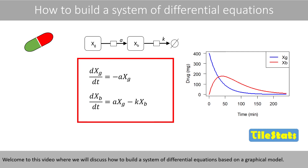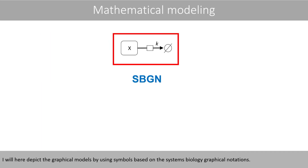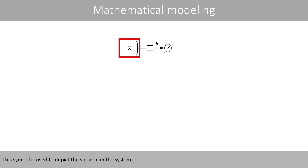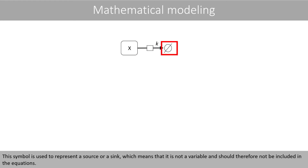Welcome to this video where we'll discuss how to build a system of differential equations based on a graphical model. I will depict the graphical models using symbols based on the systems biology graphical notations. This symbol is used to depict a variable in the system, whereas this arrow represents a reaction. This symbol is used to represent a source or a sink, which means it is not a variable and should not be included in the equations.